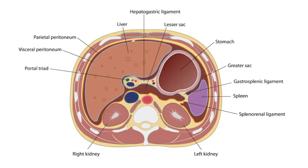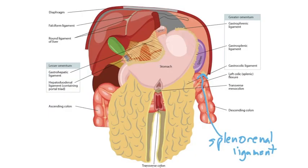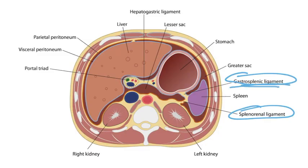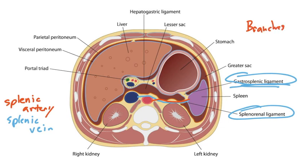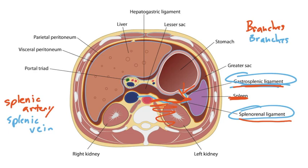An axial cut will better show us the splenorenal ligament. We can see the splenorenal ligament labeled here, and also the gastrosplenic ligament at a different angle. The splenic artery and vein are located within the splenorenal ligament, while the branches of the splenic artery and vein are in the gastrosplenic ligament. Anything branching off the aorta at the celiac trunk stays retroperitoneal until it reaches the spleen via the splenorenal ligament, then branches extend anteriorly through the gastrosplenic ligament as the short gastrics and left gastroepiploic vessels covering the stomach.